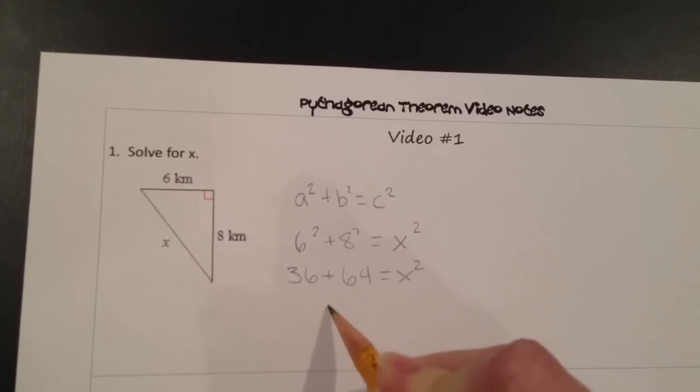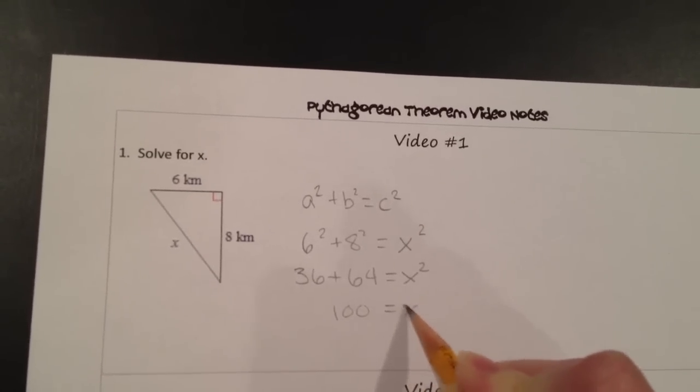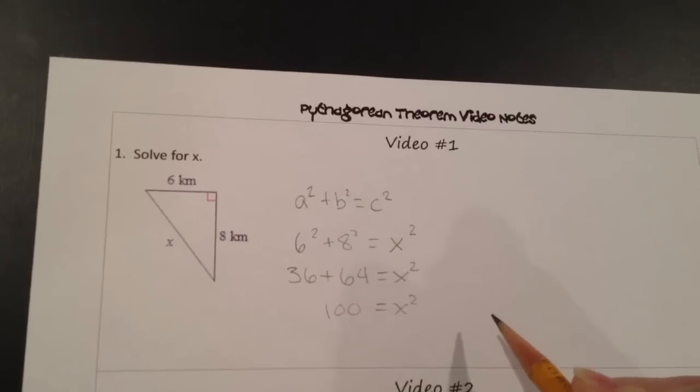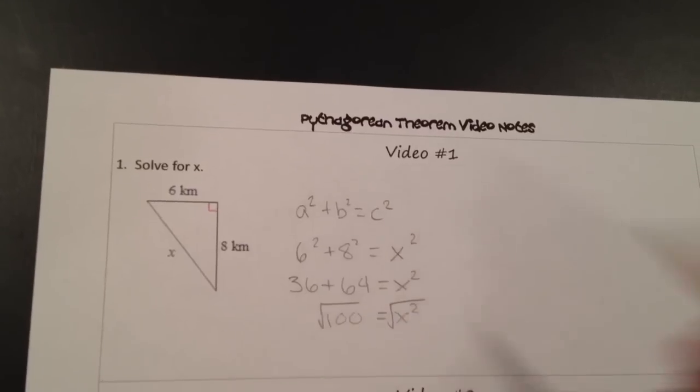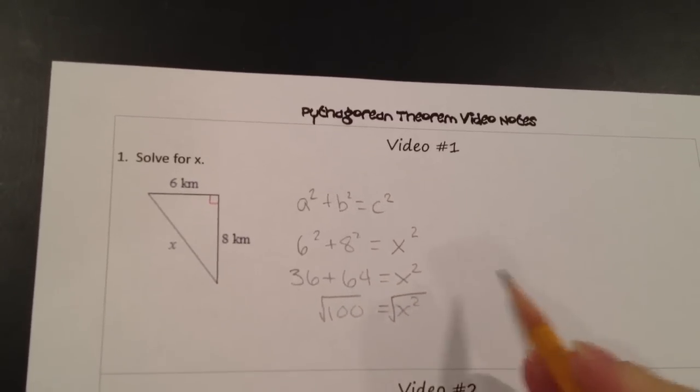36 plus 64 is 100, equals x squared. To get x by itself, we need to use inverse operations. So to undo x squared, we have the square root.